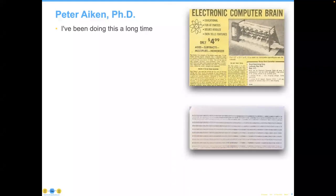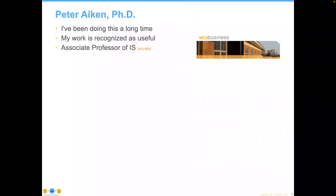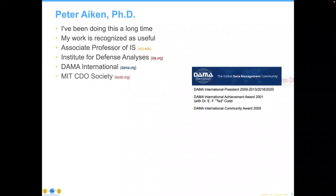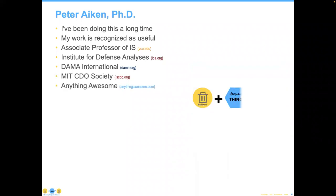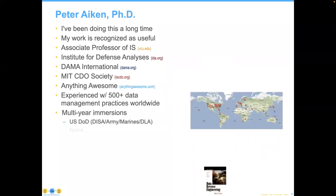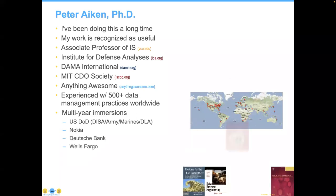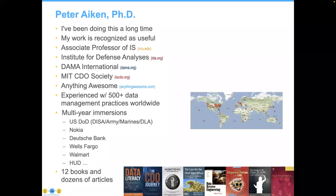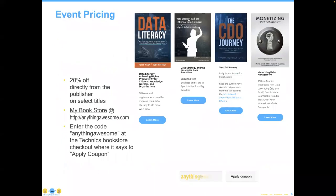Let me introduce our speaker for today, Dr. Peter Akin. Peter is an acknowledged data management authority, an associate professor at Virginia Commonwealth University, president of DEMA International, and associate director of the MIT International Society of Chief Data Officers. For more than 35 years, Peter has learned from working with hundreds of data management practices in 30 countries. Among his 12 books are many firsts. He has founded several organizations that have helped more than 200 organizations leverage data-specific savings measured at more than 1.5 billion US dollars. His latest is Anything Awesome.